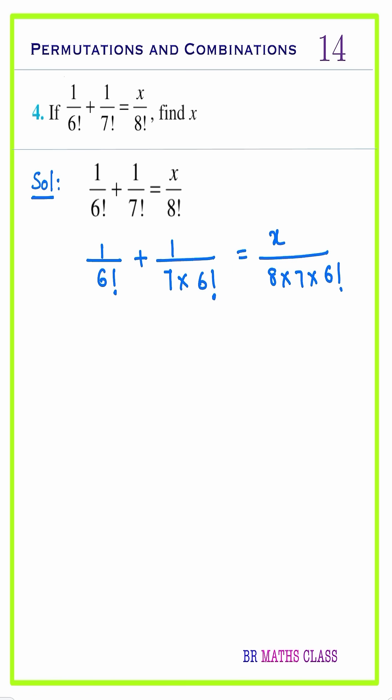You observe this left-hand side part. Here 1 by 6 factorial is there, here also 1 by 6 factorial is there. I will take 1 by 6 factorial common: 1 plus, if I take 1 by 6 factorial common here, 1 by 7 is remaining. This equals 1 by 6 factorial into x divided by 8 into 7.